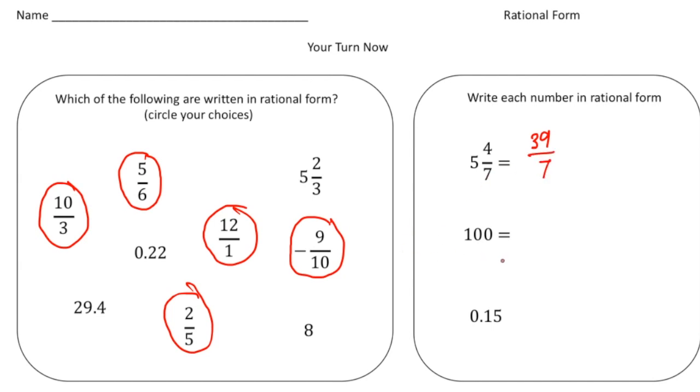Here we have the number 100, so we'd have to write this 100 over 1. And then finally, 15 hundredths, we have to write as 15 over 100. And sometimes it's nice to reduce it, so this could reduce down to 3 twentieths. So both of these are actually in rational form, this is just in simplest terms. And that normally is what you want right there. Alright, how'd you do?